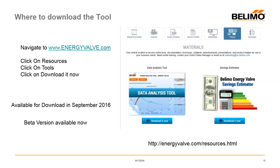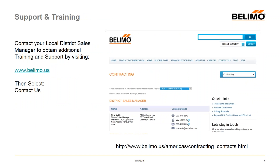The tool will be fully available for download in September 2016 at energyvalve.com — go to the Resources, Tools and Downloads tab. If you'd like to use the beta version currently available, contact your district sales manager by going to belimo.us and selecting Contact Us. You can find your district manager by state, contact them, and ask for a copy of the beta. Feedback and input are very welcome, as the tool is constantly being improved.